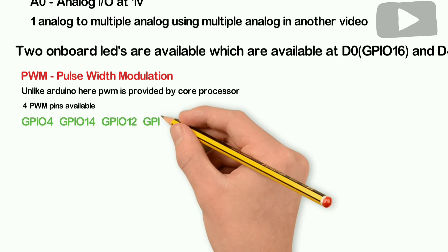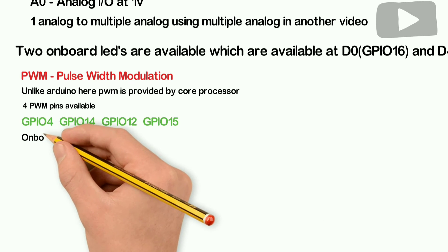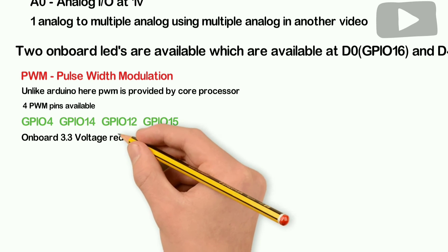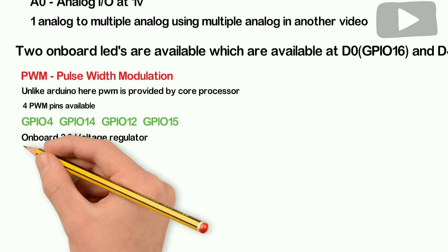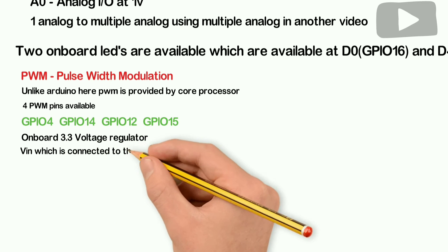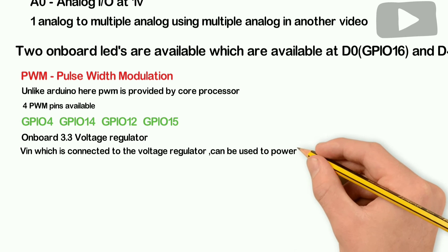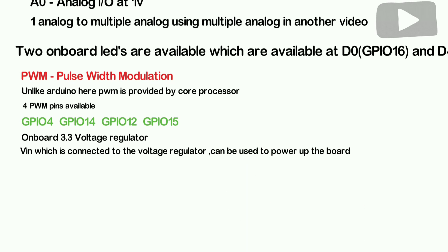Looking at the onboard components, there is a voltage regulator. The board has a VIN pin that accepts up to 5-9V input and outputs 3.3V. For serial communication, there is a chip included by default. If you miss any details or find anything incorrect, please refer to the comments section and it will be updated.